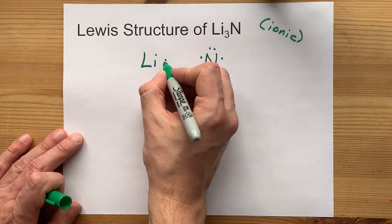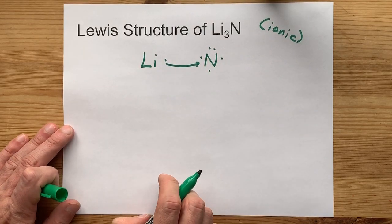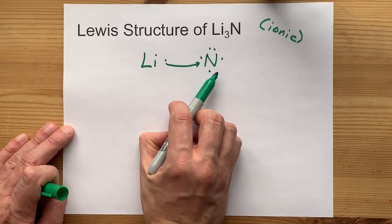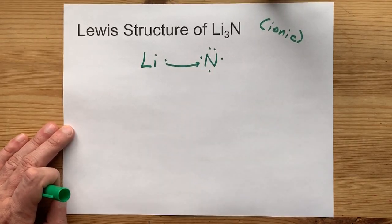This lithium can generously give one electron away to nitrogen. Now, nitrogen has six electrons in its outer shell, which is closer to eight, but it's still not a full eight.